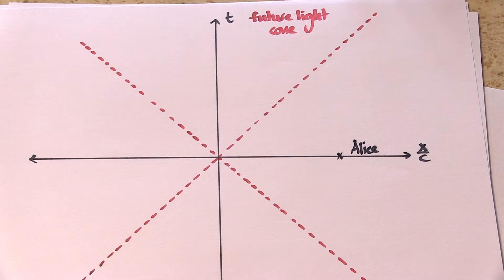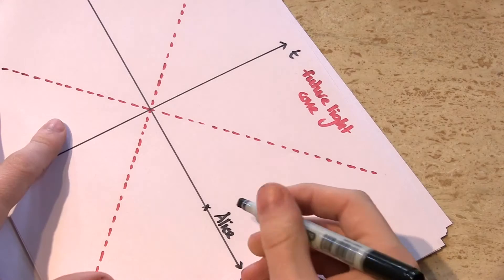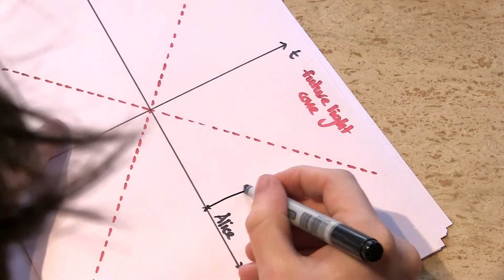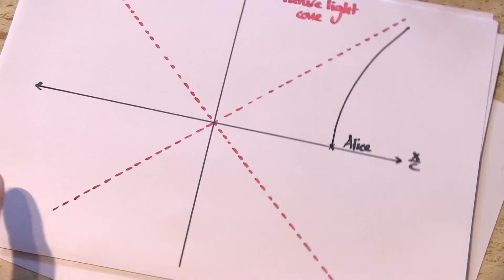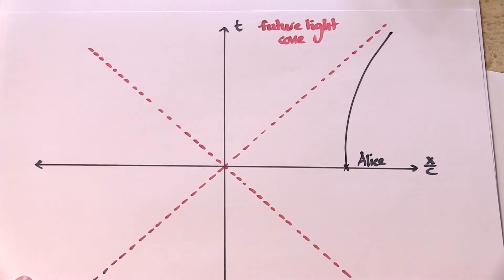Suppose she's able to constantly accelerate just enough to ensure that she never enters my future light cone, then she's going to get closer and closer to the speed of light. But of course, she can never exceed the speed of light and so the path she follows gets closer and closer to the boundary of the light cone, but never quite touches it.